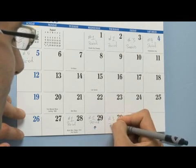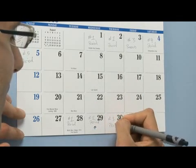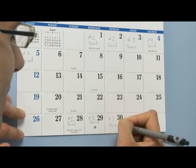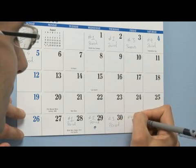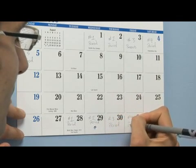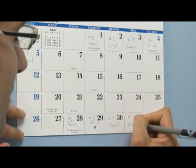A normal cycle ranges between 25 and 35 days. If your cycle is either less or greater than that, there's something causing that and you should probably seek out the help of a physician to help figure that out.